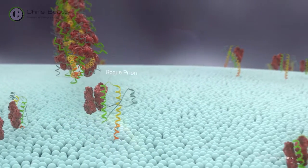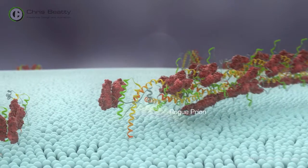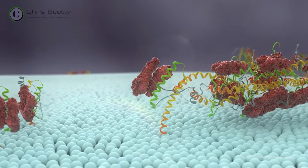Prions, the agents that cause CJD, are formed from misshapen or rogue prion proteins that stick together to form chains.